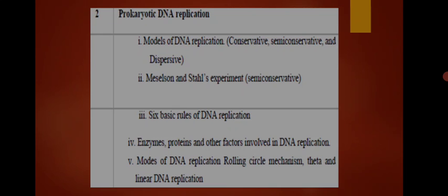In the Meselson and Stahl experiment, radiolabeled isotopes are used — the heavy isotope nitrogen N15 and the light isotope N14 — to demonstrate the semi-conservative mode. After that we have to study the six basic rules of DNA replication, which we will discuss when we start this second unit of prokaryotic DNA replication.